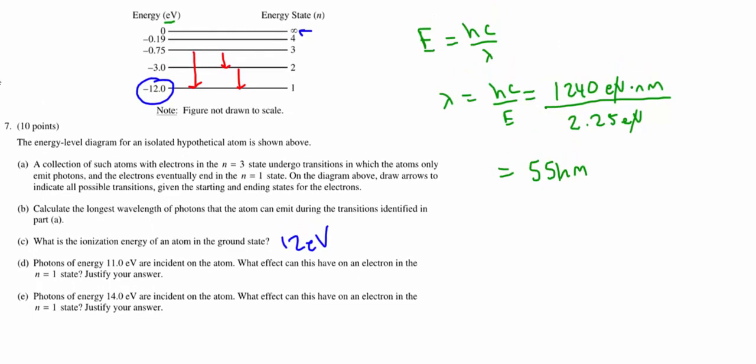Part D. Photons of 11 eV are incident on the atom. What will this do to electrons in the n equals 1 state? You've got to remember that to excite electrons, not ionize, but to excite electrons, the energy required is quantized and it needs to be exact.